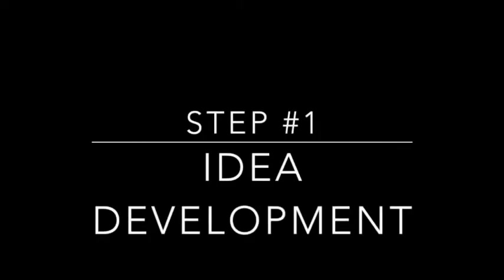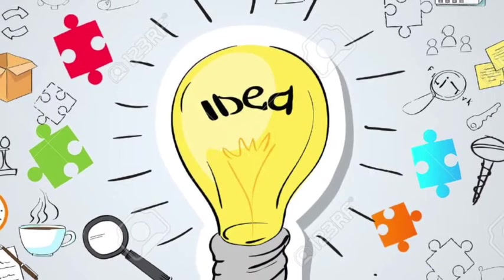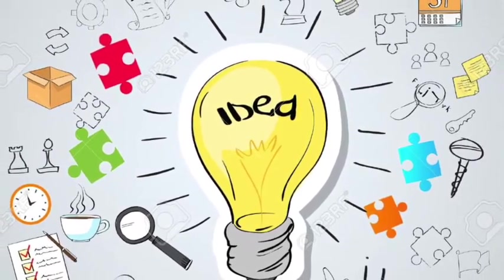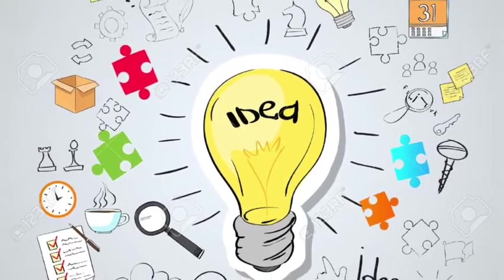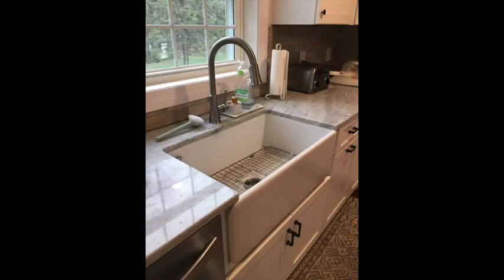Step one is going to be idea development. You're going to sit down and brainstorm some ideas — think about how you can create this look of fantasy and reality merging. Step two, you're going to gather resources. For my example, I'm going to use my kitchen as my reality portion. And in step three, we're going to sketch the reality portion.